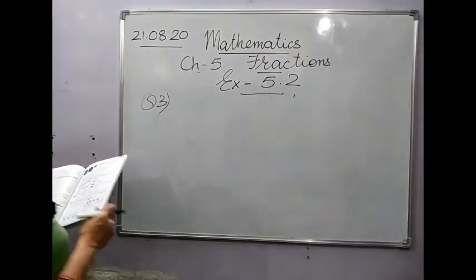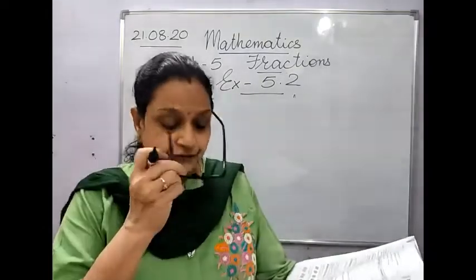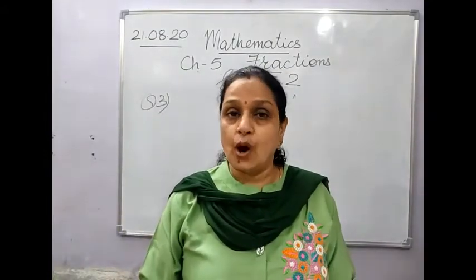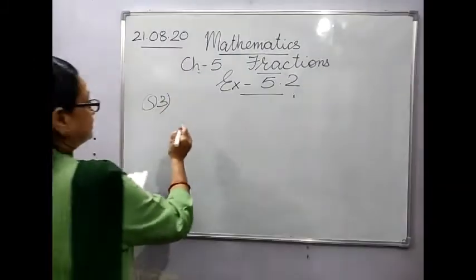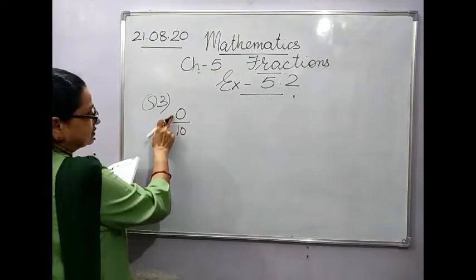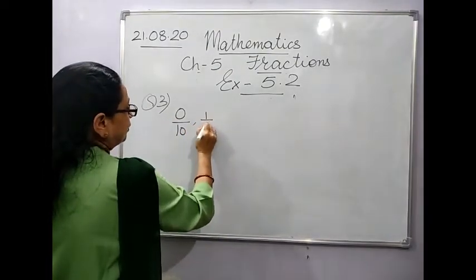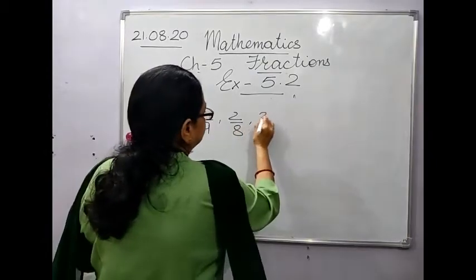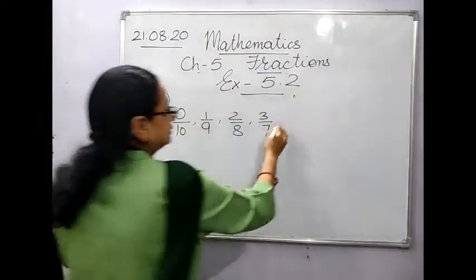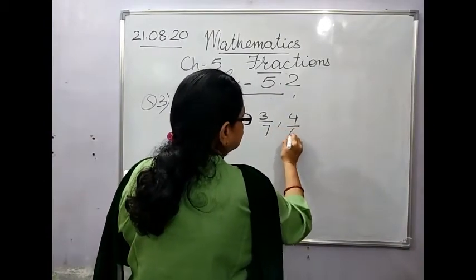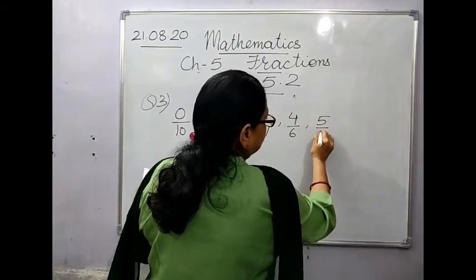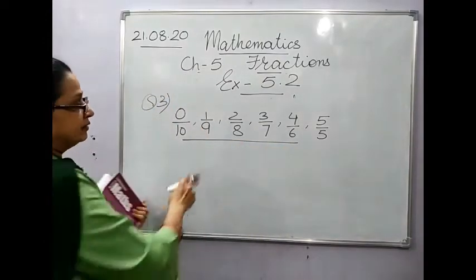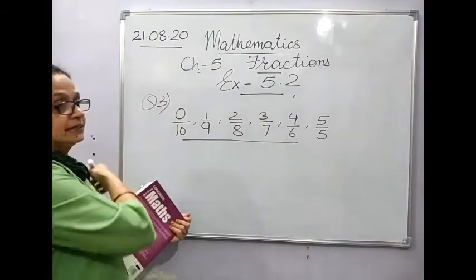Question 3 has a pattern: make fractions where the numerator plus denominator equals 10. Starting from 0/10, then 1/9, 2/8, 3/7, 4/6, 5/5 — although 5/5 adds to 10, it equals 1. So these are all the fractions where the numerator added to the denominator gives 10.